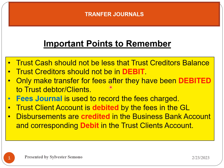A trust creditor should not be in debit. If it shows a debit balance, it means the client has a negative balance in their account, which we need to avoid by all means. Having a debit balance creates what we call an irregularity, and by the rules we are not allowed to have a trust creditor balance with a debit balance — it must always have a credit balance.